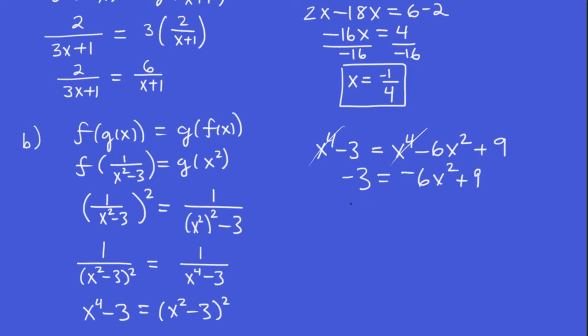Why don't I bring the minus 6 x squared over. So it becomes a positive 6 x squared. I have my positive 9 here. I bring the minus 3 over. It becomes a positive 3. So we get 6 x squared equals 12. Divide both sides by 6. So x squared is 2.